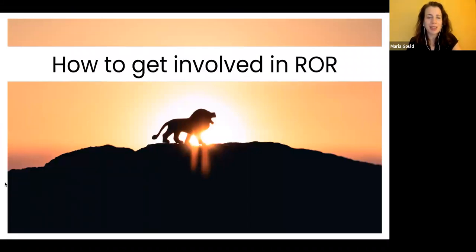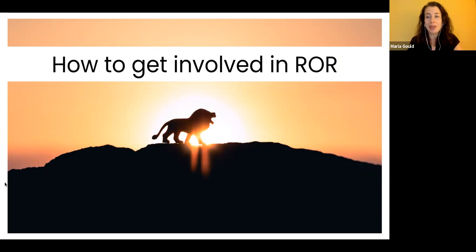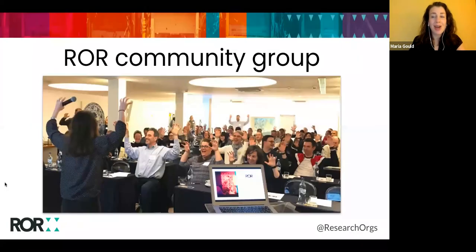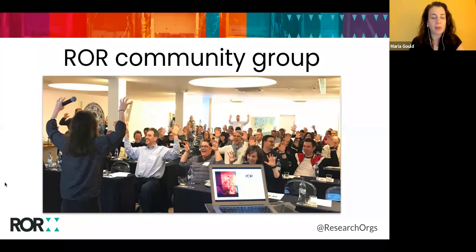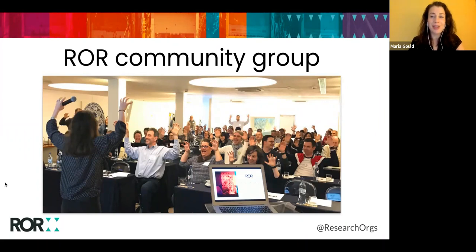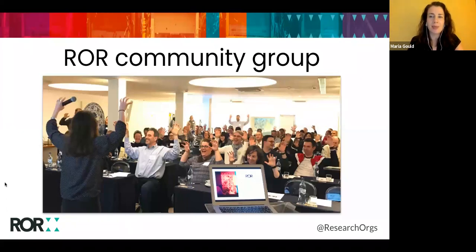I'd like to close this portion of the webinar by reiterating that ROR is a community-driven effort, truly, and there are many different ways to get involved and stay up to date. One of the best ways to be involved in ROR is to join our community advisory group. We meet for bi-monthly calls to discuss project updates and hear feedback, and we have some smaller working groups operating in parallel on specific topics — for instance, a group that's focused on publisher adoption. For the past couple of years we have been able to hold in-person community meetings, but our events and outreach are now focused on virtual interactions, which means we have the option to include a wider range of people in these conversations.